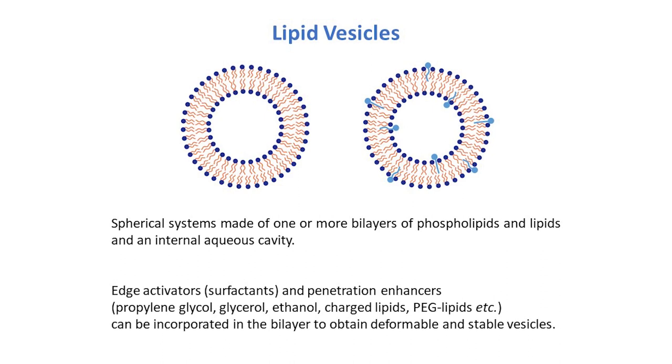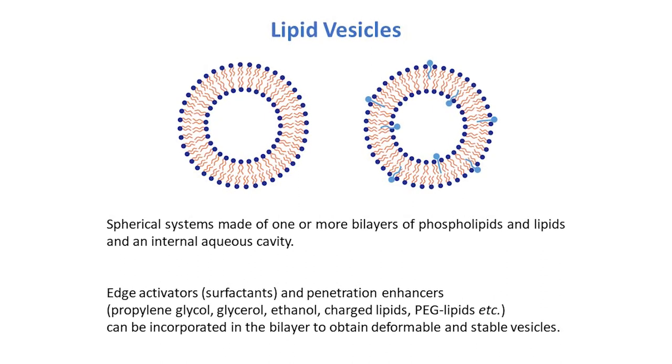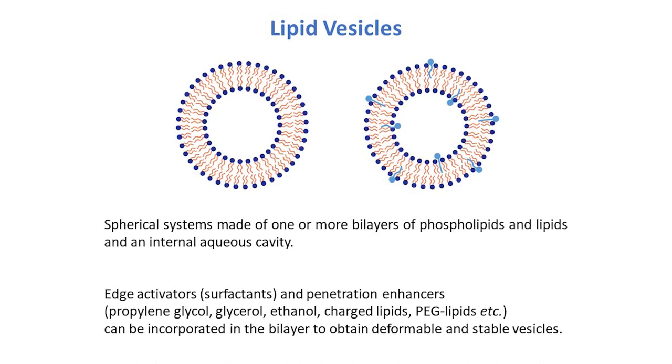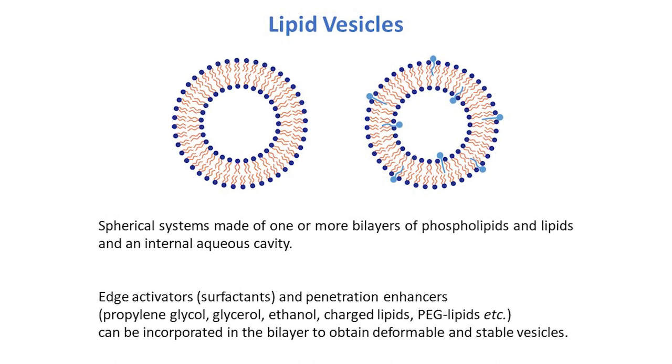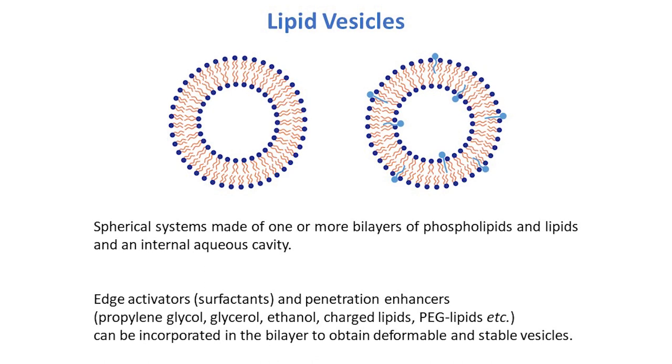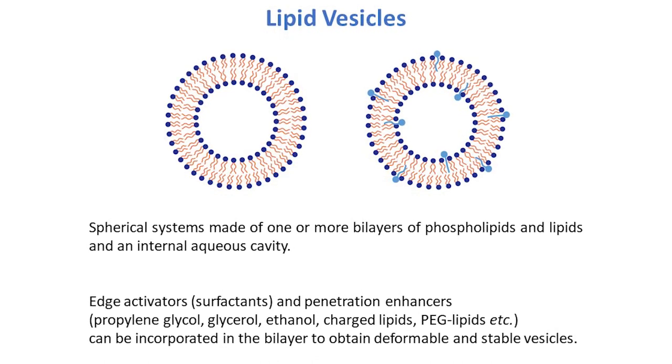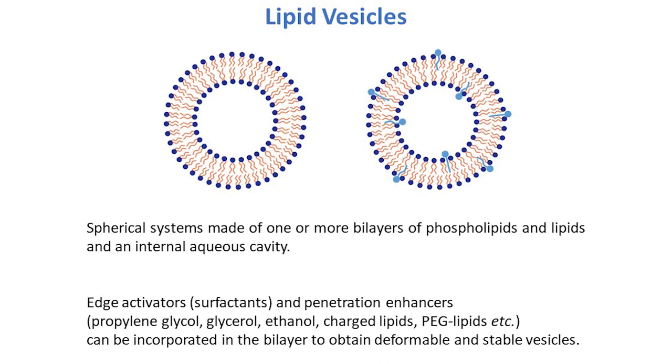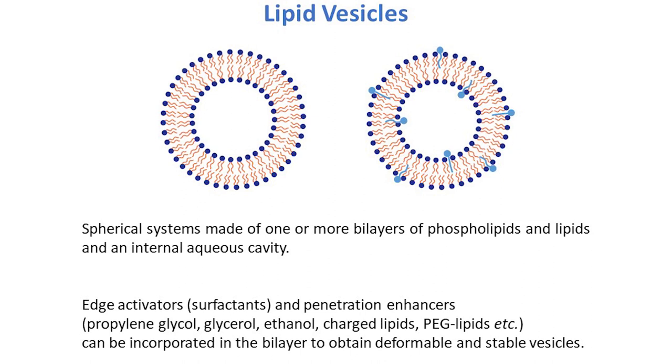Lipid nano-vesicles are spherical systems made up of one or more bilayers of phospholipids and lipids and an internal aqueous cavity. To obtain deformable vesicles or stabilize the vesicle bilayer, edge activators and penetration enhancers, such as propylene glycol, glycerol and ethanol, can be incorporated into the bilayer.